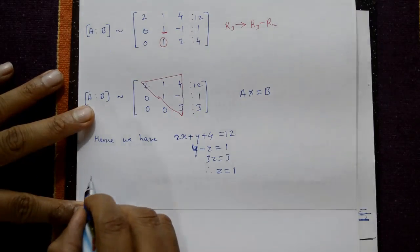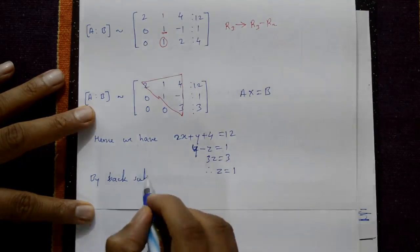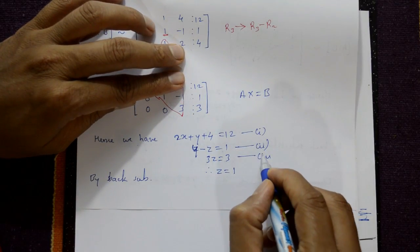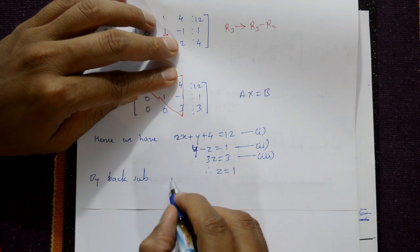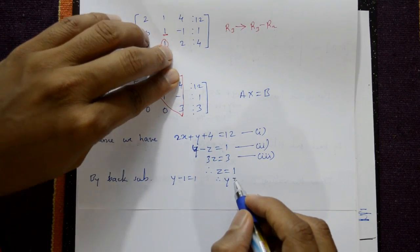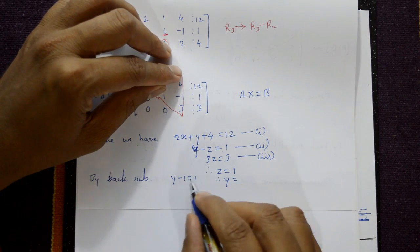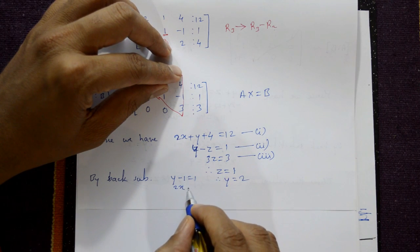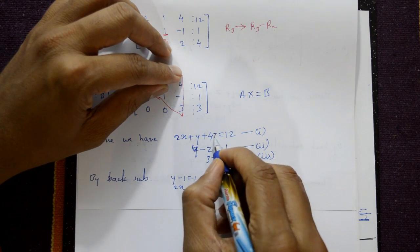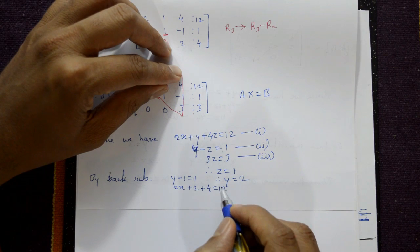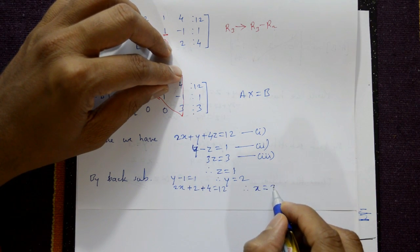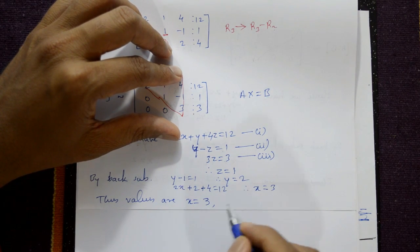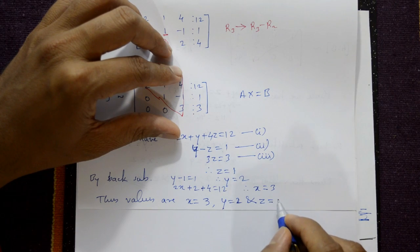By back substitution: substituting z = 1 into equation 2 gives y minus 1 = 1, so y = 2. Substituting y = 2 and z = 1 into equation 1 gives 2x plus 2 plus 4 equal to 12, so x = 3. The required solution is x = 3, y = 2, and z = 1.